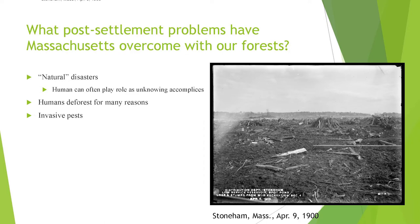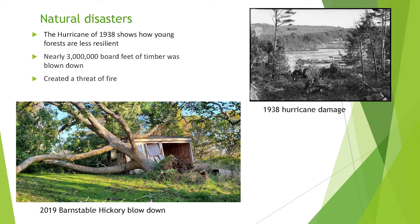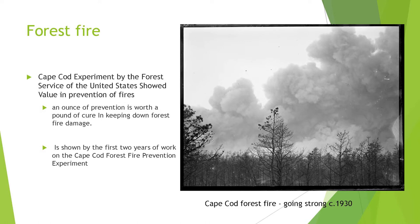Now I will elaborate on what post-settlement problems Massachusetts has overcome. These include natural disasters, human deforestation, and invasive pests. The hurricane of 1938 was the most destructive storm in Massachusetts history. Several factors conspired to make that so. Days before the storm, it had been very wet, saturating the soil and predisposing the trees to wind throw. Comparing hurricane paths and damage, it is estimated that Massachusetts had a young forest in 1938 and was unable to protect itself. When nearly 3 million board feet of timber was blown down across Massachusetts, we had unintentionally created the most vulnerable landscape possible.